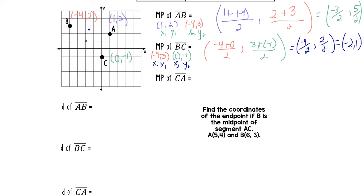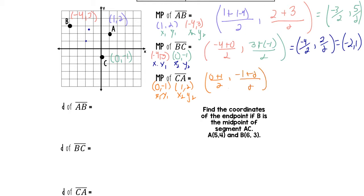Now the midpoint of CA. So C is (0, -1) and A is (1, 2), labeled X1, Y1, X2, Y2. The X portion: X1 plus X2 over 2 is zero plus one over 2, which is one half. The Y portion: Y1 plus Y2 over 2 is negative one plus two over 2, which is one half. So the midpoint of CA is (1/2, 1/2). It would lay right about there, which looks to be pretty much in between A and C.